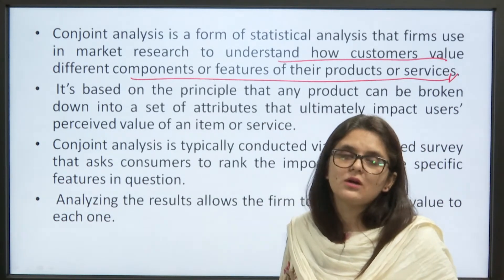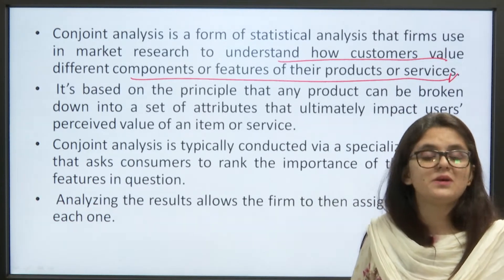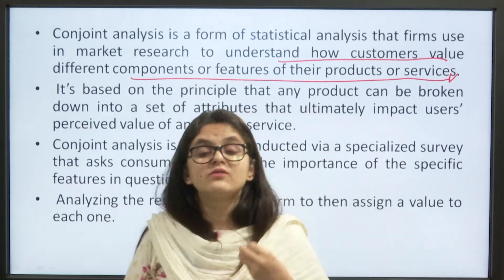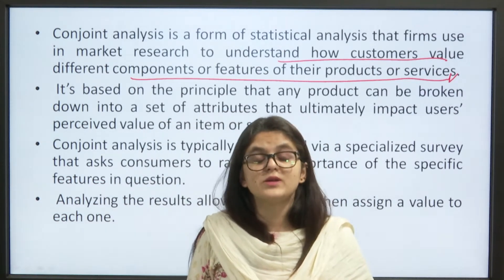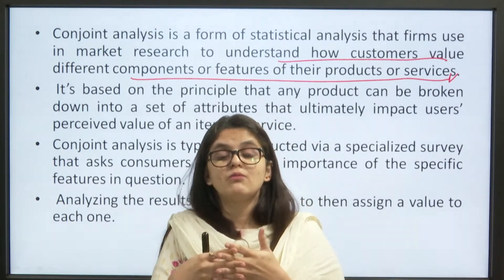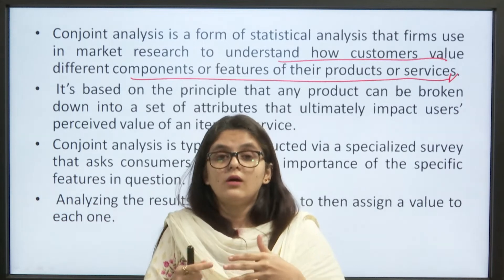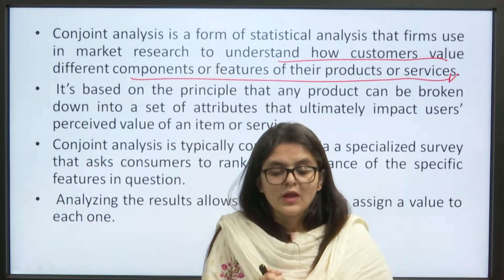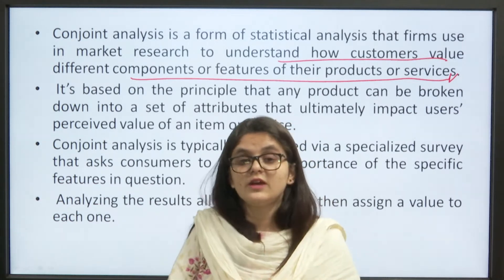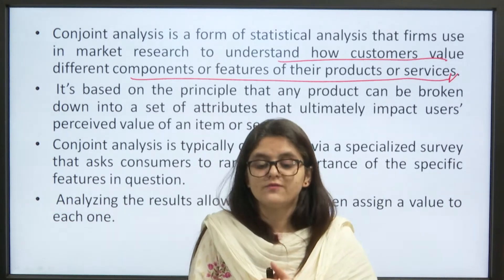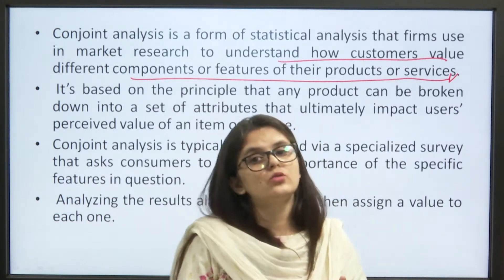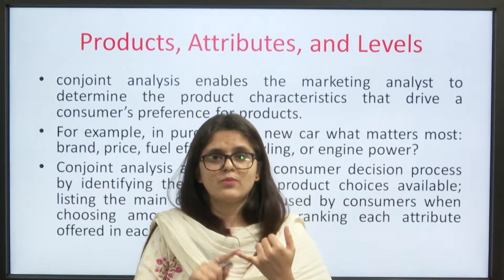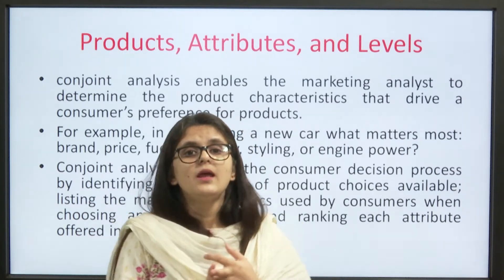Conjoint analysis is typically conducted through special surveys. Consumers are asked to basically rank, according to importance, the various attributes or features of different products in the survey. When consumers provide their rankings, analysts analyze the results and the firm can then assign a value to each one. When considering products or services, we look at three things: the product, the attributes, and the levels.